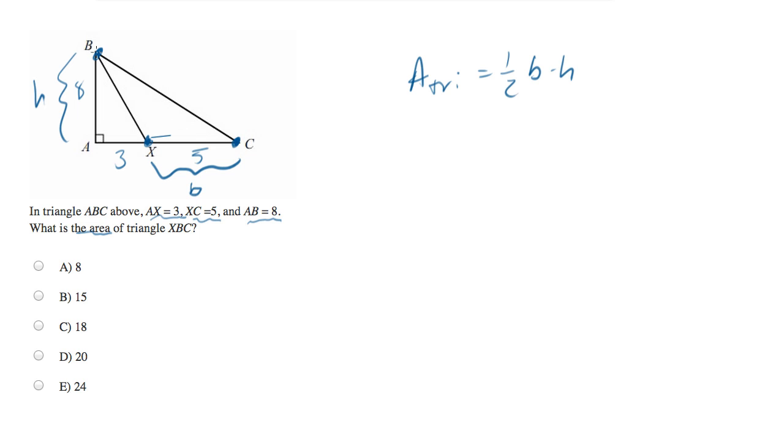you grab the other corner, the one that you haven't used yet, and you drop that down such that when it hits a line which has been extended from the base, it makes a 90-degree angle.